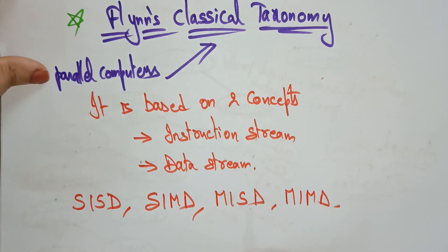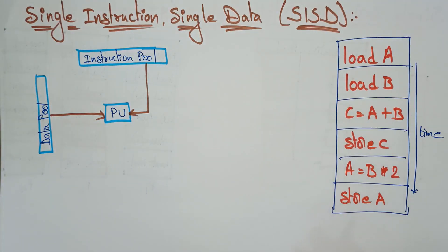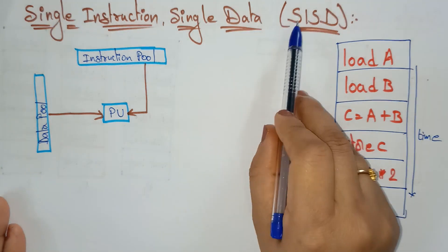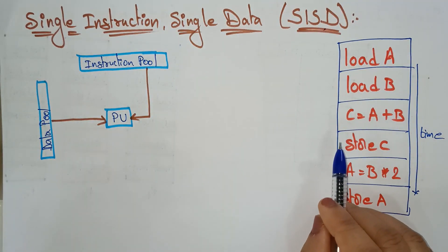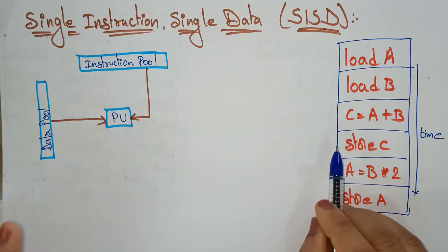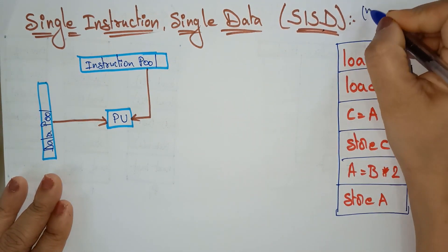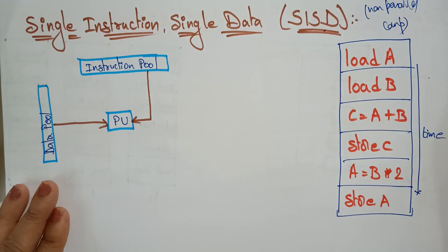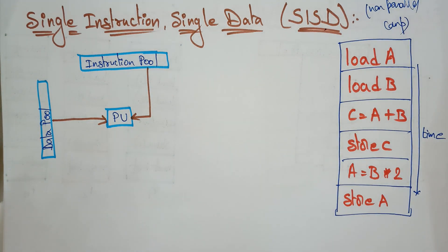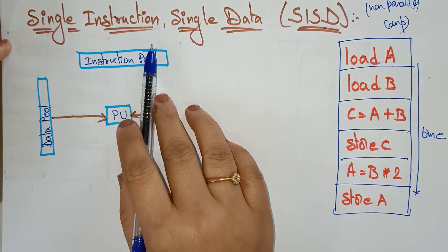Let me explain them one by one. First, have a look at Single Instruction Single Data — SISD. The meaning of SISD is: only one instruction is there and we are using only a single data. That means it is a non-parallel computer, because no multiple data or multiple instructions are there. So operations are performed sequentially — a single instruction on single data.